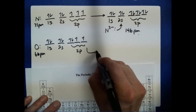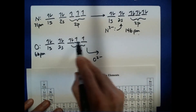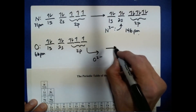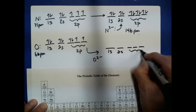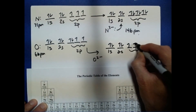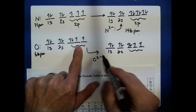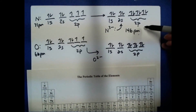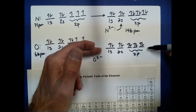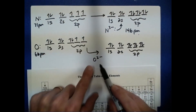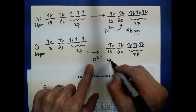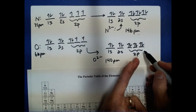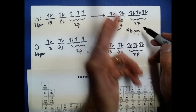Going from oxygen to oxide, O²⁻, we add two electrons to fill the 2p subshell, again giving the same electronic configuration as neon. Oxide and nitride are isoelectronic with one another. The oxide ion is 140 picometers, a little smaller than nitride, because only two electrons were added to oxygen rather than three.